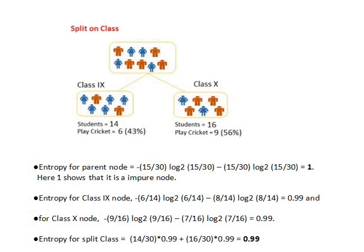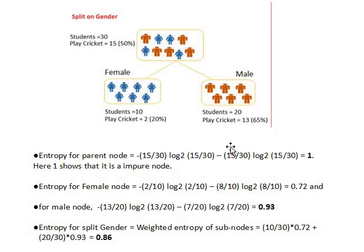Since lower entropy means a better variable for the decision, and the entropy for gender (0.68) is lower than for class (0.99), we use gender as the first decision node, then class variable for subsequent decisions. This confirms gender gets priority as the decision variable in our decision tree.